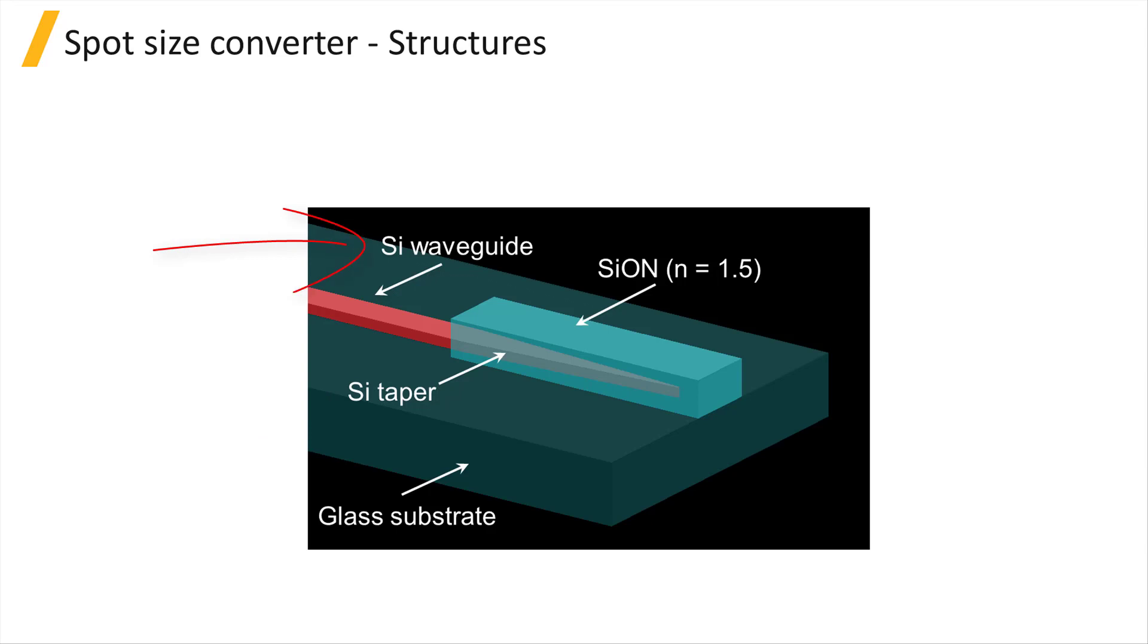The device consists of an SI waveguide and a taper with another low index, N equals 1.5, Sion waveguide surrounding the taper. The whole structure is embedded in a glass cladding.